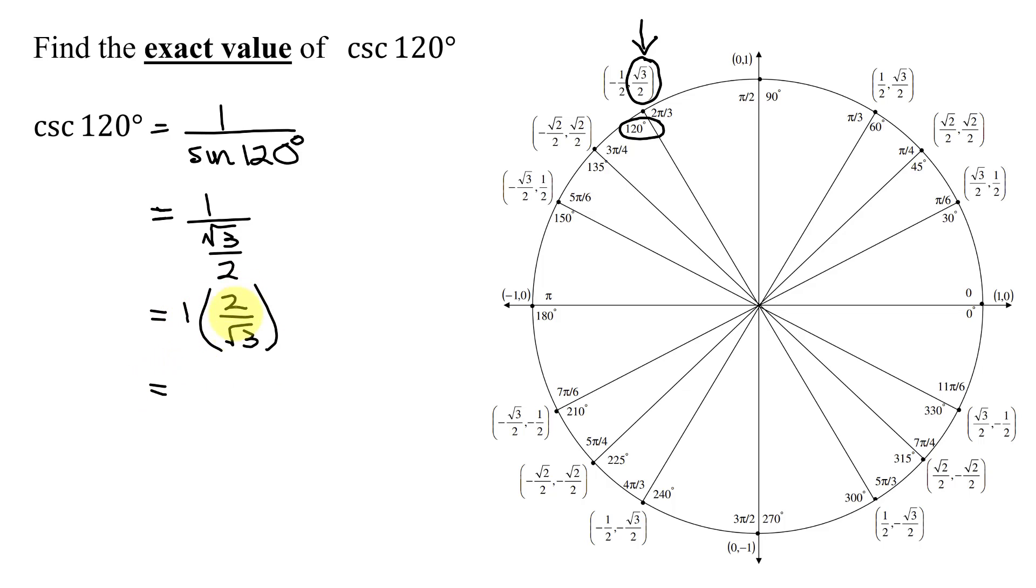Well, 1 times 2 divided by the square root of 3 is just 2 divided by the square root of 3. If you're not required to rationalize the denominator of your answer, that is one way of writing the answer to the cosecant of 120 degrees.